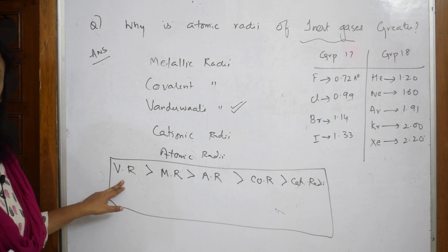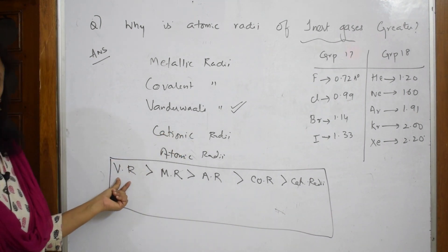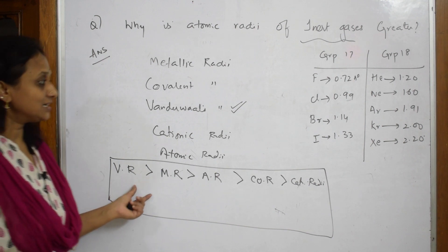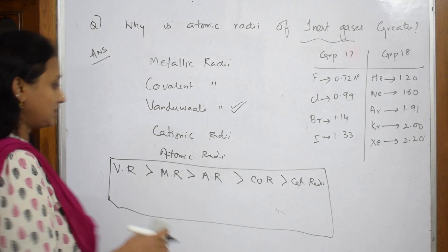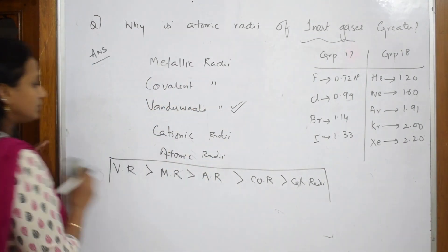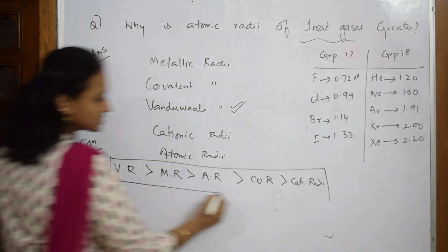In case of inert gases, what are we considering? We are considering van der Waals radius. Isn't it maximum? That is the reason that inert gases have higher atomic radius.